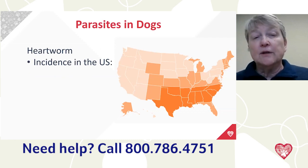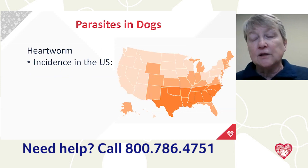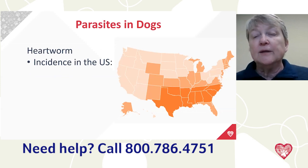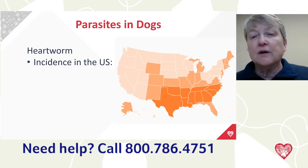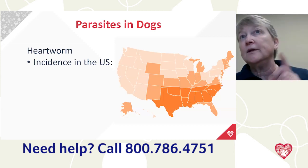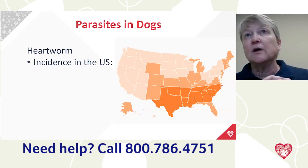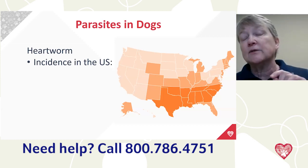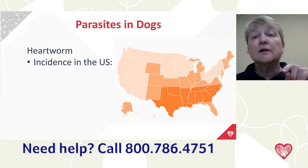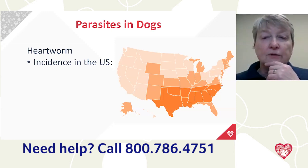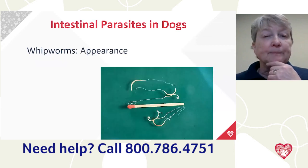Heartworm incidence is somewhat regional — it's been found even in Alaska, but the most prevalent areas are the southeastern United States where it's wet and warm most of the year. We do have some cases in Wisconsin — I've seen one native Wisconsin dog that had heartworm at eight months old. It's much more common in the southern tier of states.